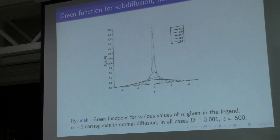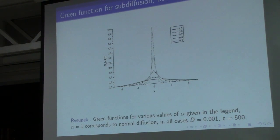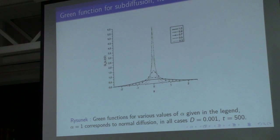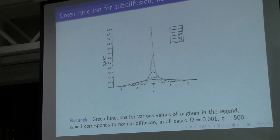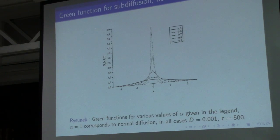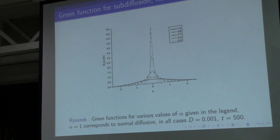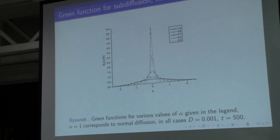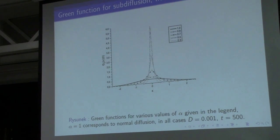For normal diffusion, we have Gaussian functions. Sub-diffusion occurs in systems in which the mobility of particles is strongly hindered due to the complex internal structure of the medium — for example, in gels or porous media.